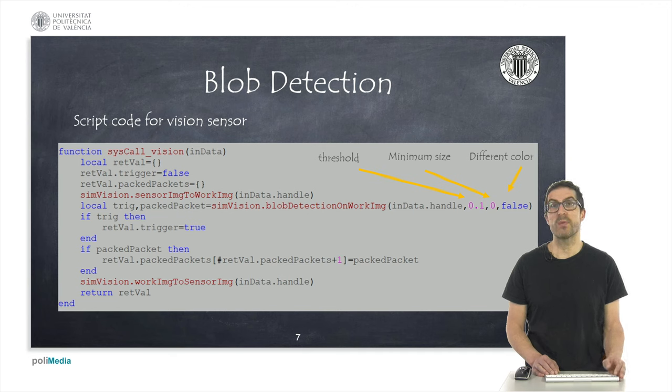It has several parameters, one of the most important one is the threshold value, since it will determine the sensitivity of the sensor to detect certain type of objects based on the contrast.